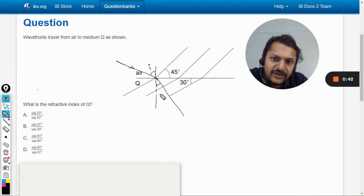Now we need to find these angles from geometry. What is the refractive index of Q? Fine. So let us first of all concentrate on this. What is happening here?